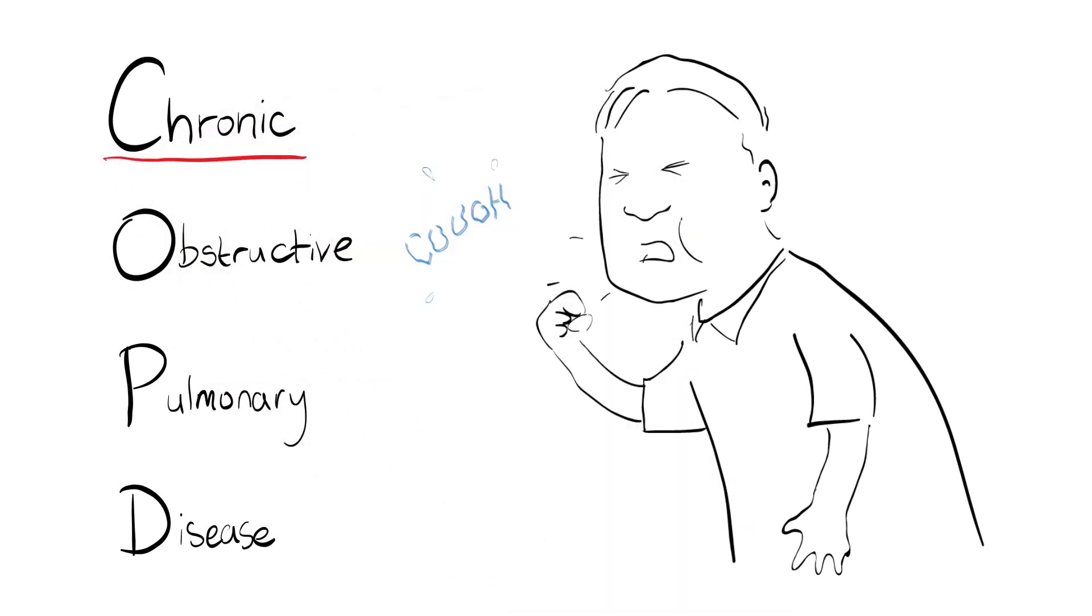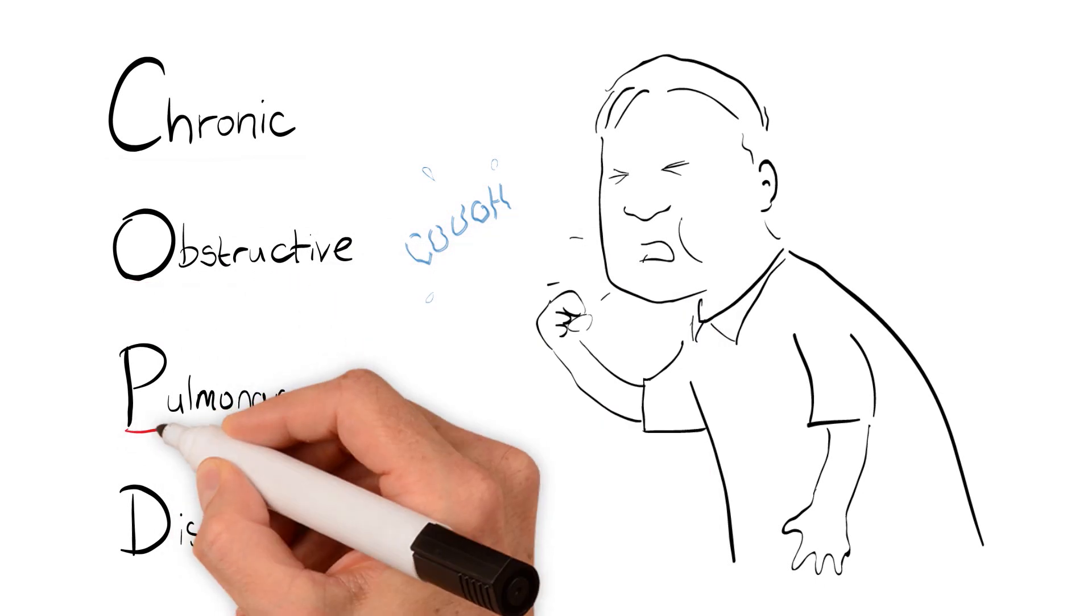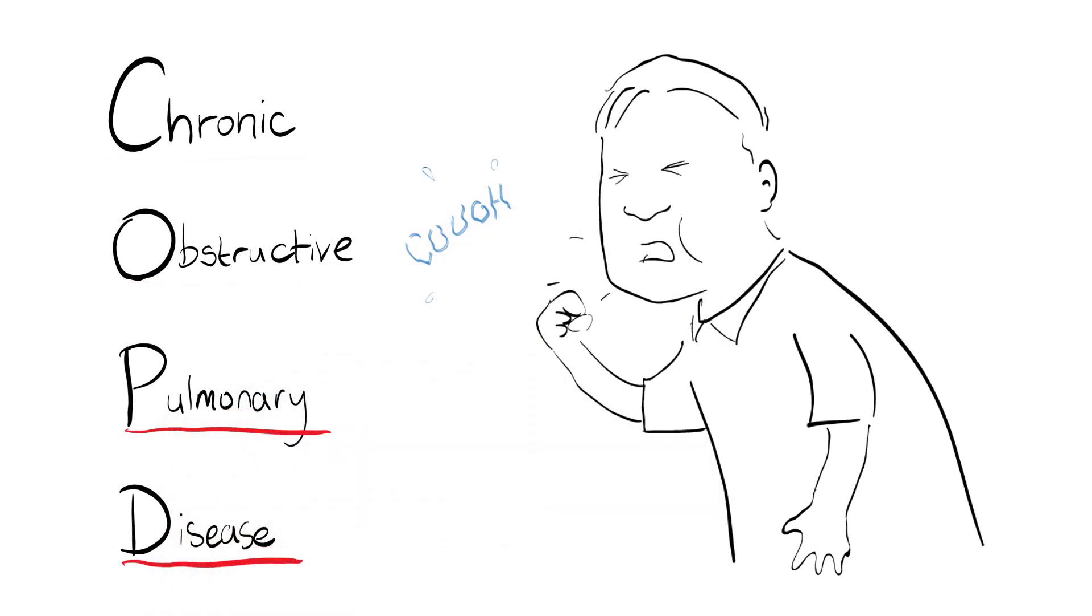Chronic describes how it doesn't go away, obstructive describes the way it makes breathing difficult, and pulmonary disease means it affects the lungs.